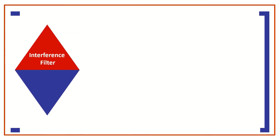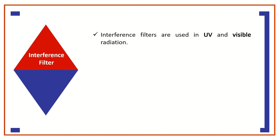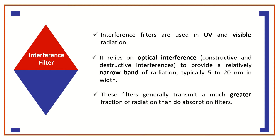Interference filters are typically used for absorption measurements in UV and visible radiation. As the name implies, an interference filter relies on optical interference — that is, constructive and destructive interferences — to provide a relatively narrow band of radiation, typically 5 to 20 nanometers in width.